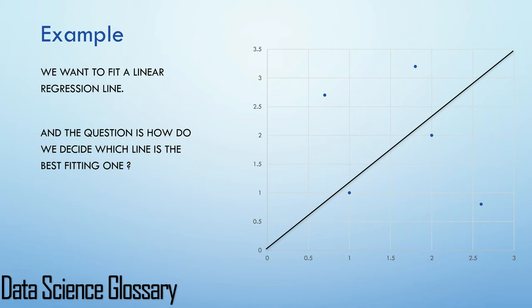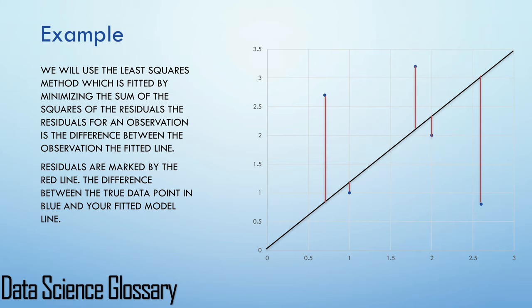We can go ahead and use the least squares method which we discussed earlier. This method is fitted by minimizing the sum of the squares of residuals. The residual for an observation is the difference between the observation, the y value, and the fitted line. In this image the residuals are marked by the red line, the difference between the true data point in blue and your fitted model line, the black diagonal line.